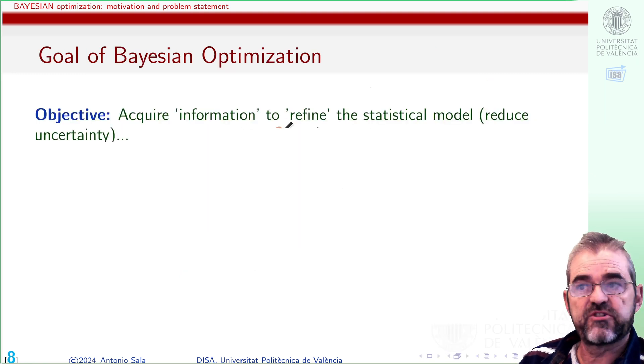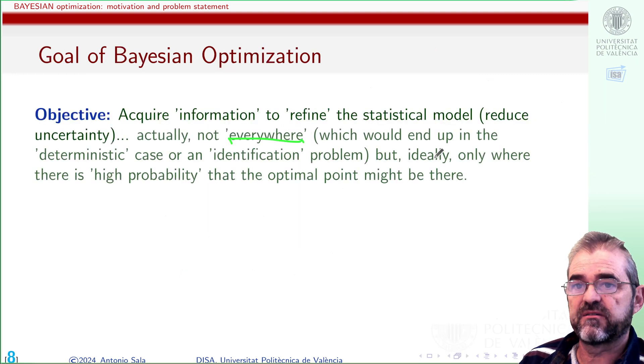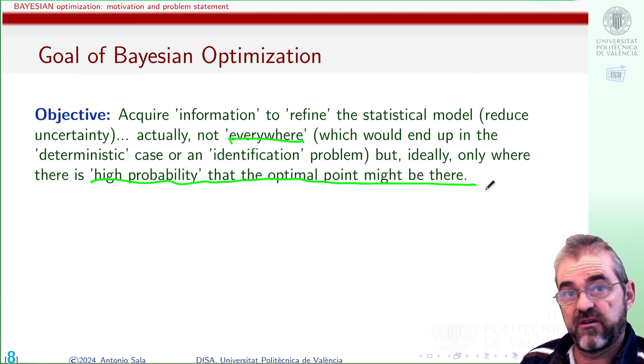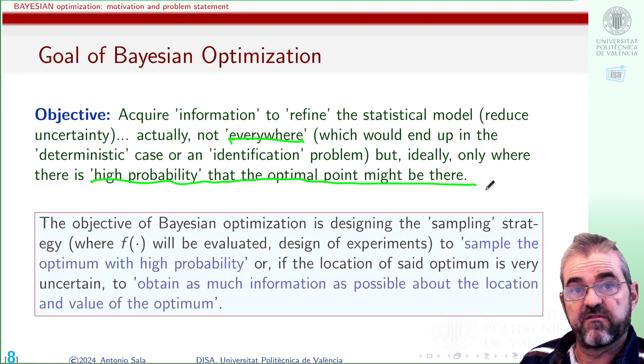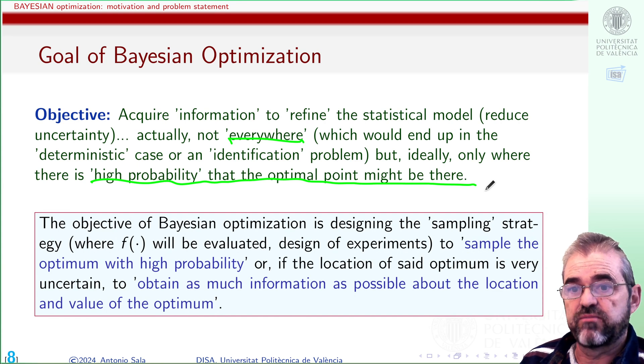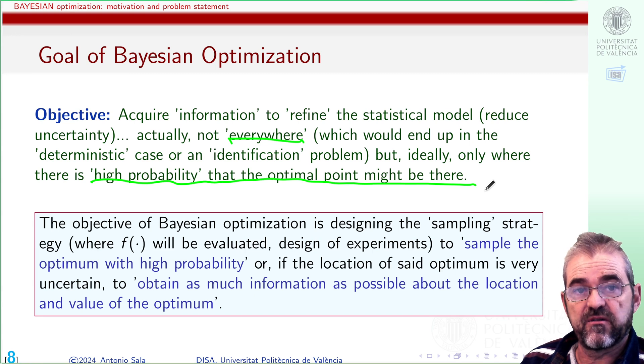So we acquire information not everywhere but only where there is high probability of finding the optimum or sort of. So the objective of Bayesian optimization is designing the sampling strategy, design of experiments in which I will evaluate the function f. And the ideas would be to sample points in which there is high likelihood of finding the optimum.